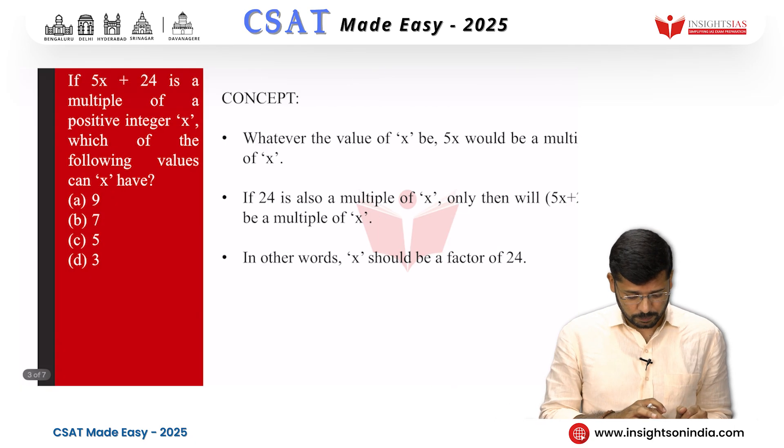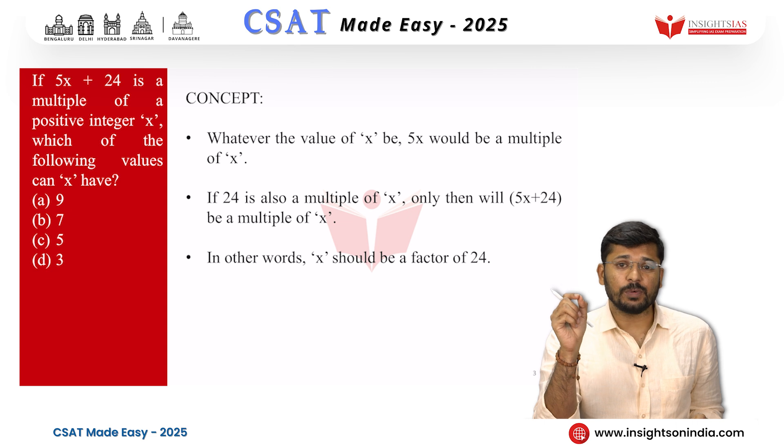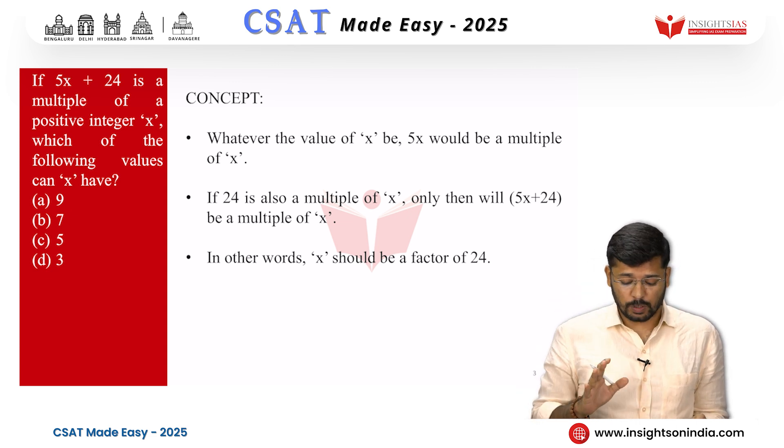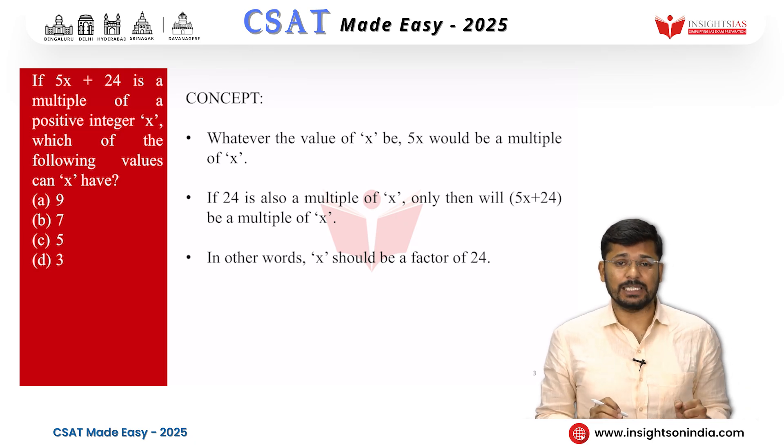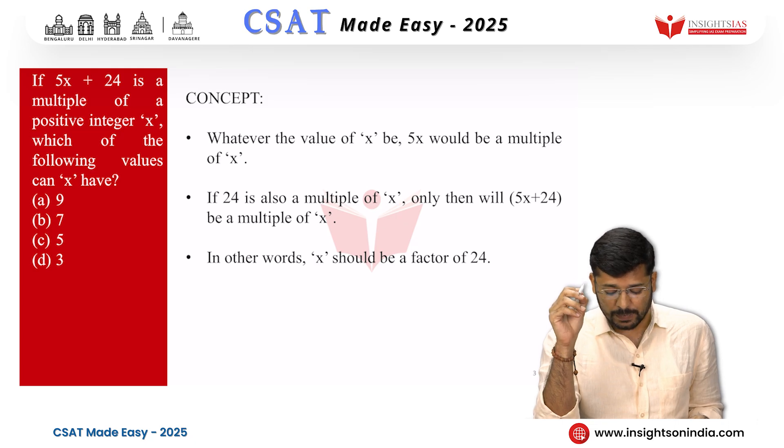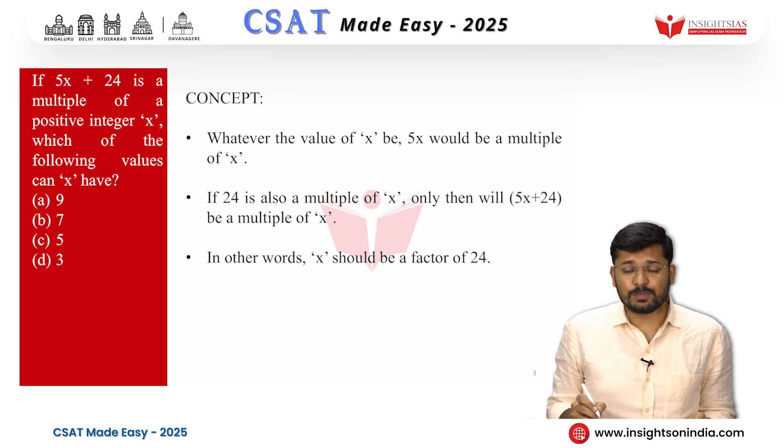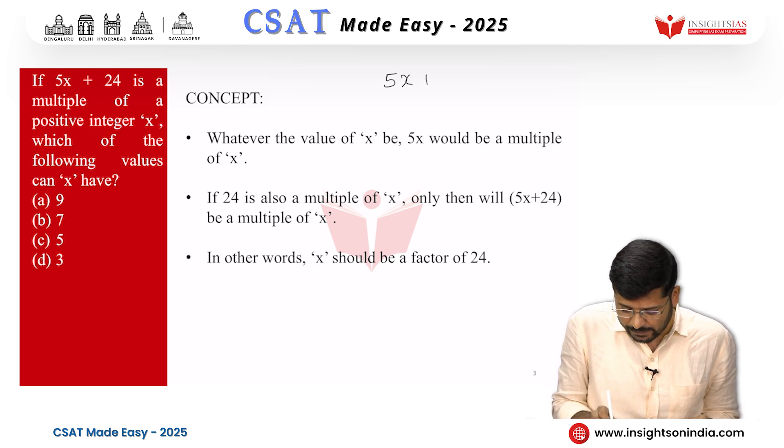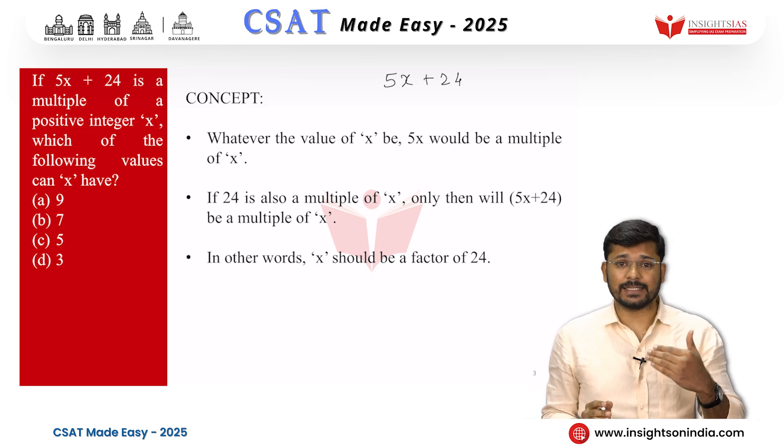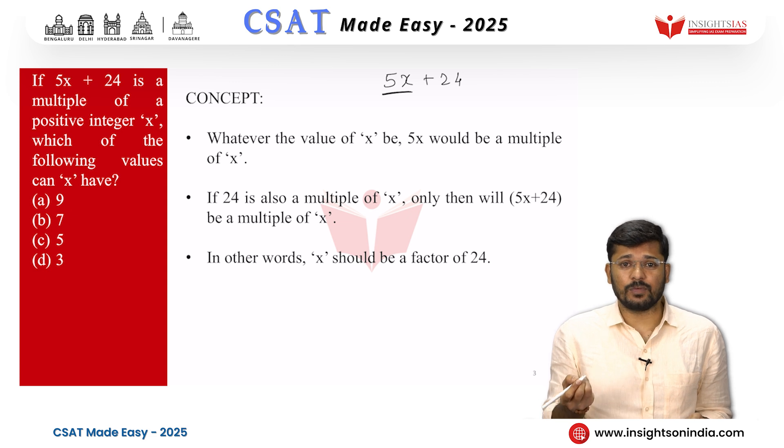Let us go to the next question now. If 5x plus 24 is a multiple of a positive integer x which of the following values can x have? Let us read the concepts based on which this question has been framed. Whatever the value of x be, 5x would be multiple of x. The given expression is 5x plus 24 and they are telling us that this 5x plus 24 is a multiple of x. This 5x is definitely a multiple of x.